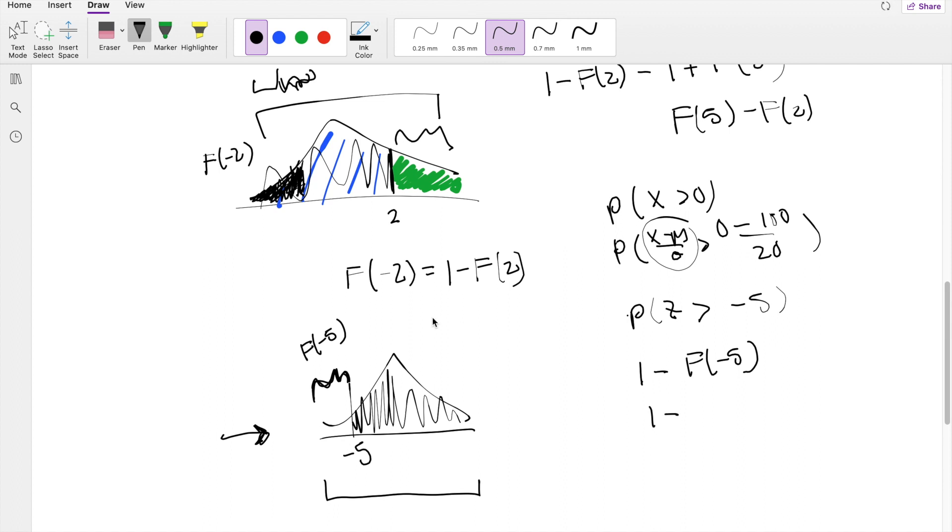But because we know that the F of negative 5 is also equivalent to 1 minus F of 5, we can do 1 minus 1 minus F of negative 5. So the denominator just becomes F of 5.